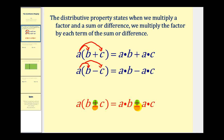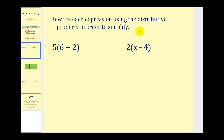Let's take a look at some examples. We want to rewrite each expression using the distributive property in order to simplify. In this first example, we have five times the quantity six plus two. So we'll multiply the five and the six and also multiply the five and the two, giving us five times six plus five times two.